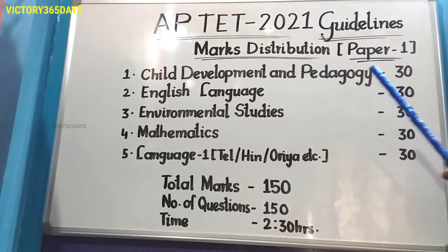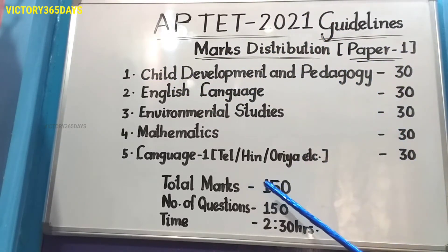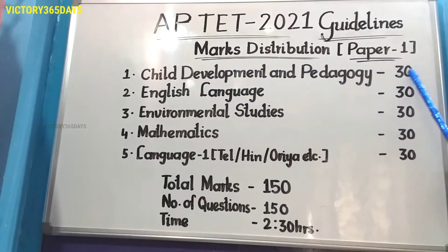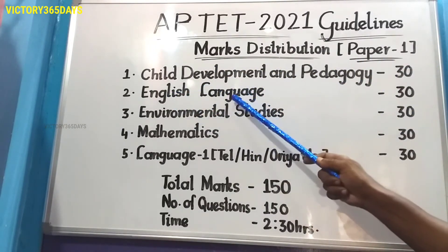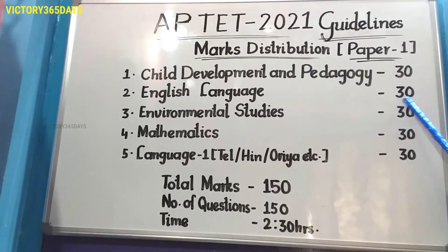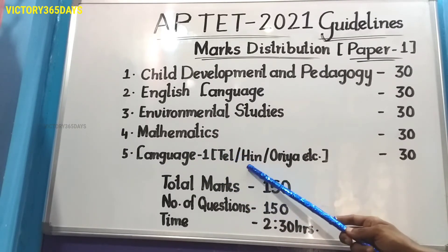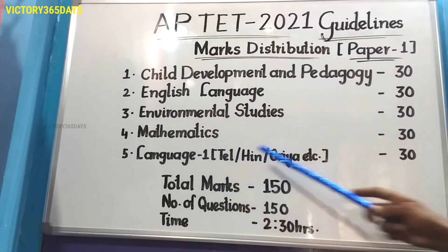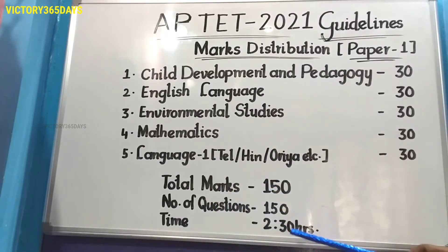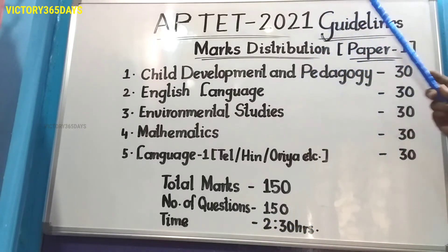The marks distribution for AP TET 2021 Paper One: total 150 marks, duration two and a half hours, 150 questions. Child Development and Pedagogy — 30 marks. English Language: grammar, vocabulary, methodology, writing skills — 30 marks. Environmental Studies — 30 marks. Mathematics — 30 marks. Language One (Telugu, Hindi, Odia, or other languages) — 30 marks. Total: 150 marks.